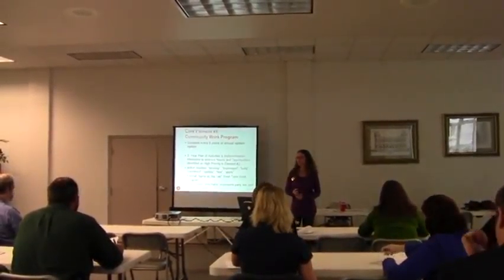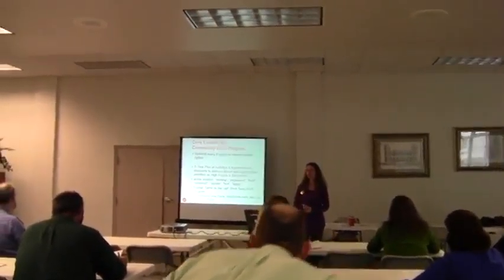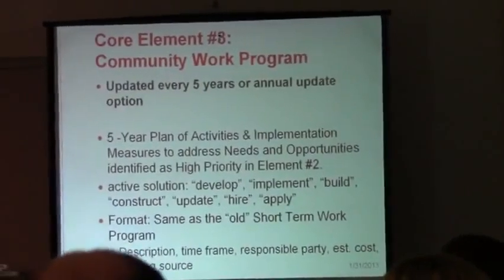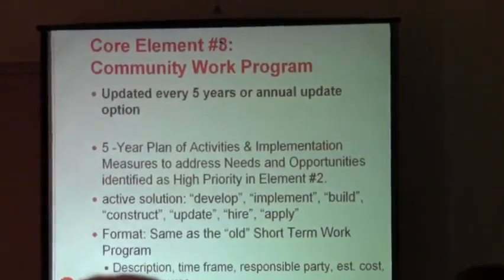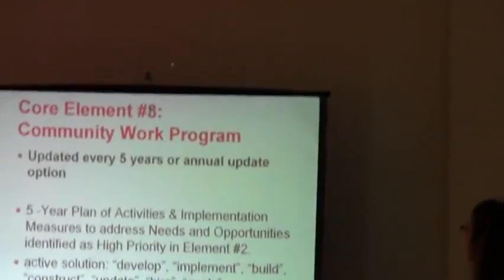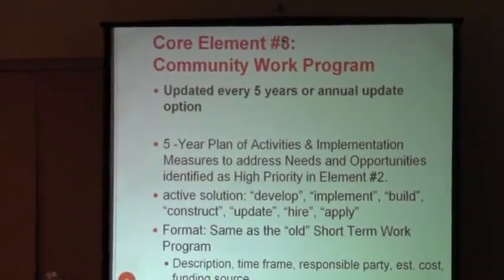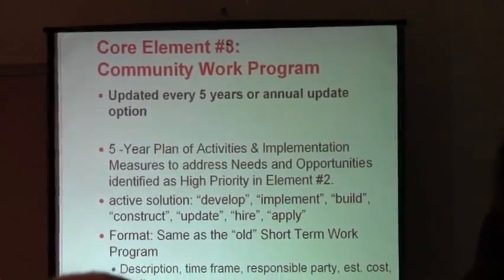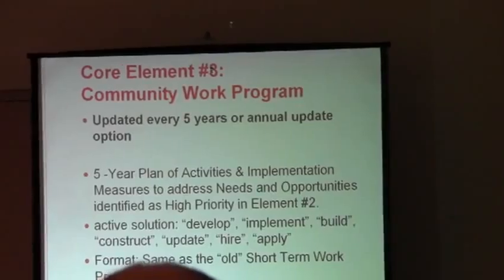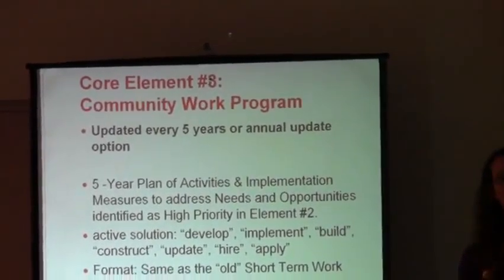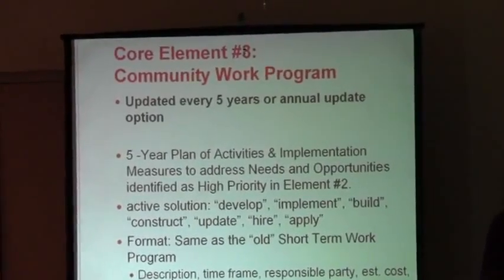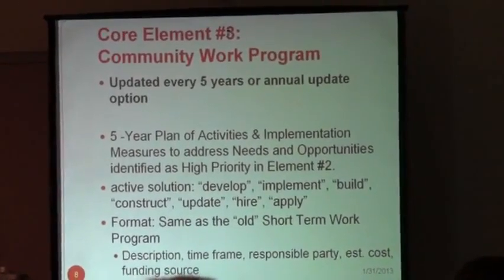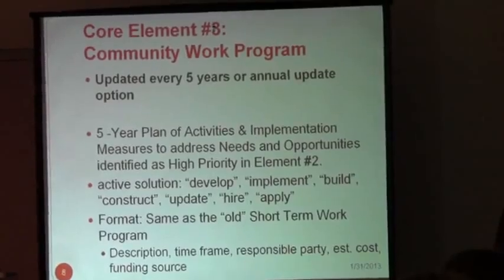Number three: the core element of the core elements is the community work program. PCA just changed the terminology — that is your good old short-term work program, that is your five-year plan. Just like it was before, a five-year work program with all your activities and implementation measures. This goes back to element number two, where you were supposed to identify the needs and opportunities as high priority — this is where you're actually supposed to address them.